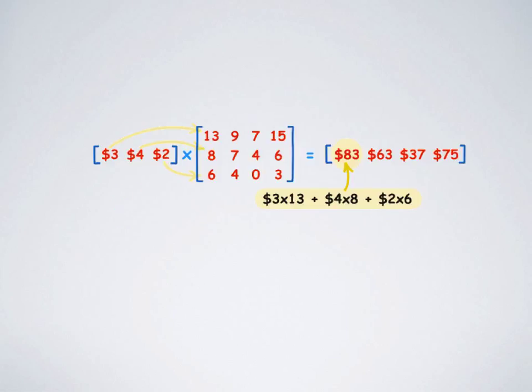Dot products could be used to accomplish this. So we are modeling the problem as a 1 by 3 matrix. That is, the unit price is 1 row and 3 columns. And we are modeling the unit sales to be 3 rows and 4 columns. It's a 3 by 4 matrix. Now we can find the dot product.